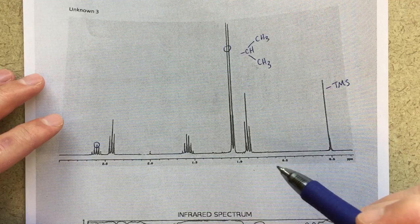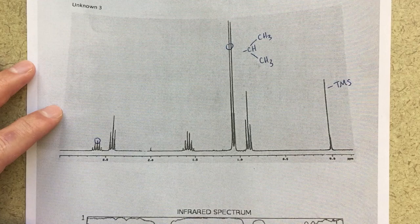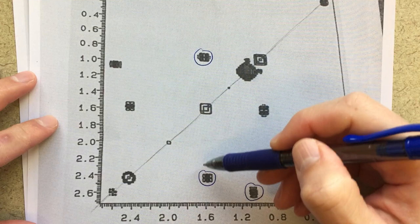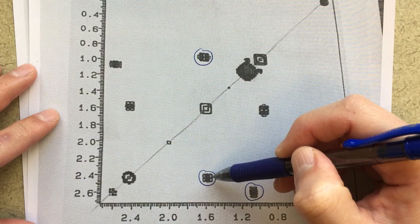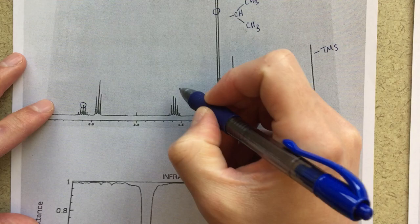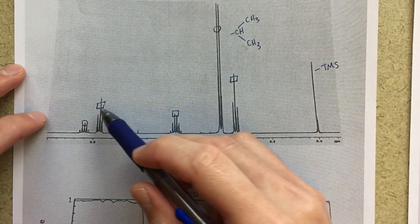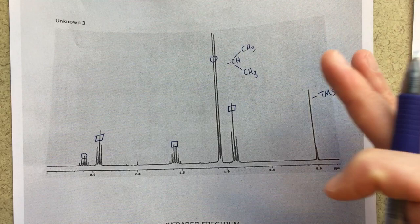Now we have three more signals to identify. Looking at the COSY NMR for the peak at 1.6, I've got two different cross peaks: one coupling to the peak at about 1.0 and another coupling to the peak at 2.4. Let me mark these with squares to indicate coupling. So the 1.6 peak is coupling to both a triplet over here and a triplet over there.